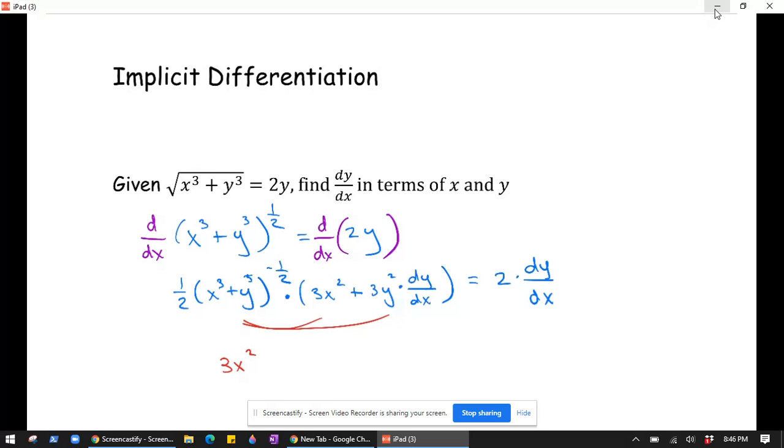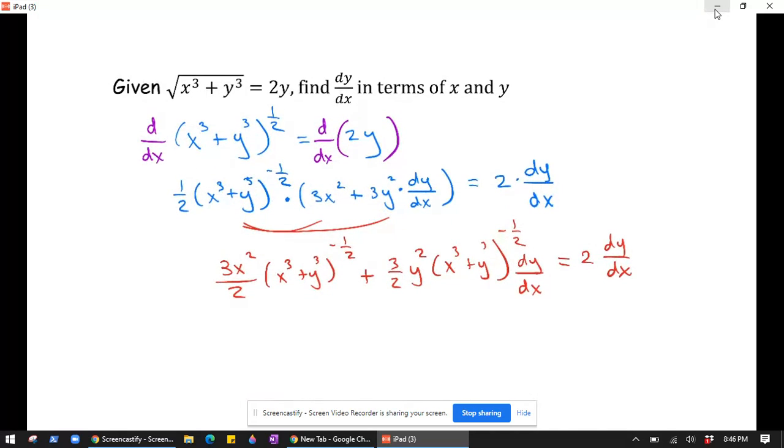I'll write times x cubed plus y cubed to the negative 1/2. And then the second term would become 3/2 y squared times x cubed plus y cubed to the negative 1/2, and there's a dy/dx in there. That's dy/dx, and that equals 2 dy/dx.